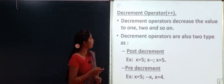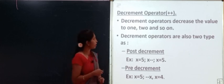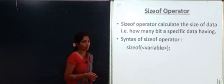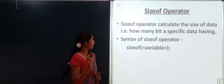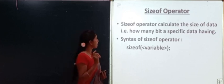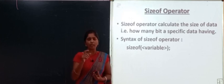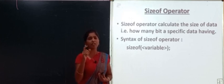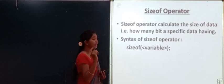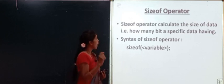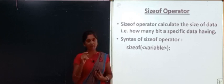The last one mentioned is the sizeof operator. The sizeof operator calculates the size of data — given a variable or data type, it calculates how many bits or bytes of memory it occupies. For example, with int x = 10, sizeof tells you how much memory space that variable occupies.